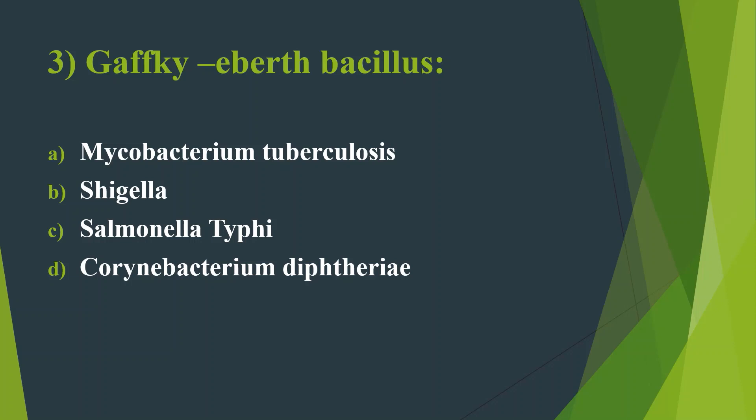Option D, Corynebacterium diphtheriae, is known as club-shaped bacteria. The Elek gel precipitation test is used for Corynebacterium diphtheriae.